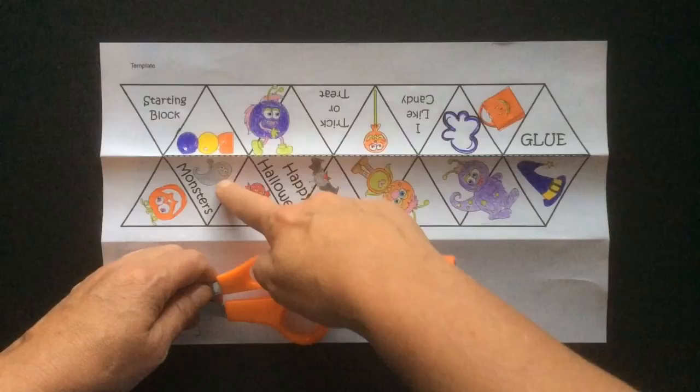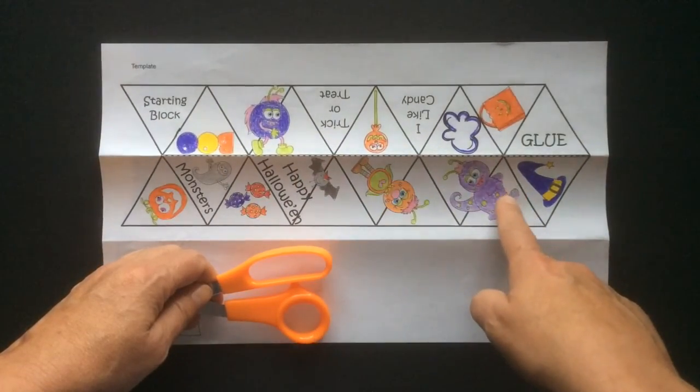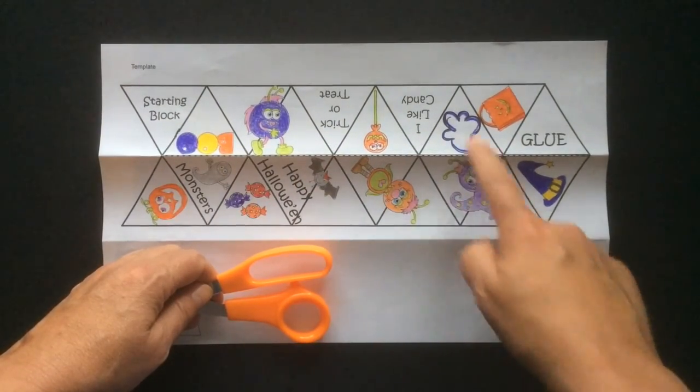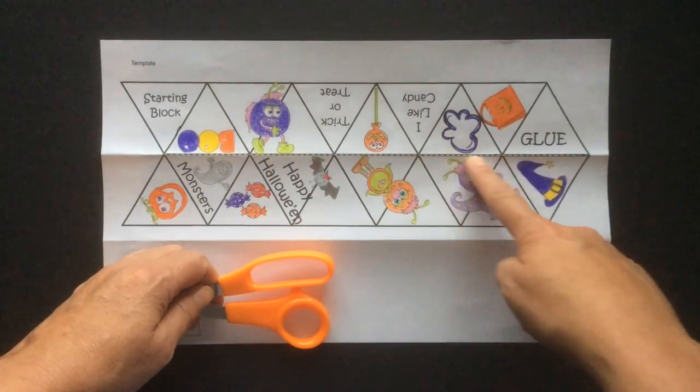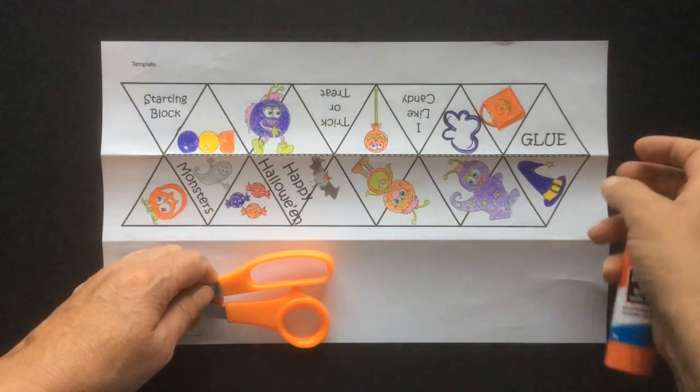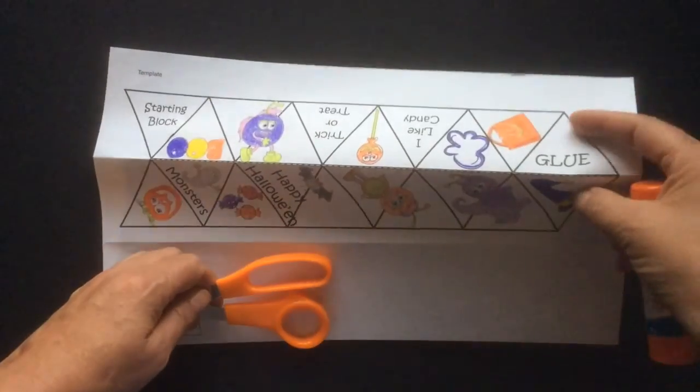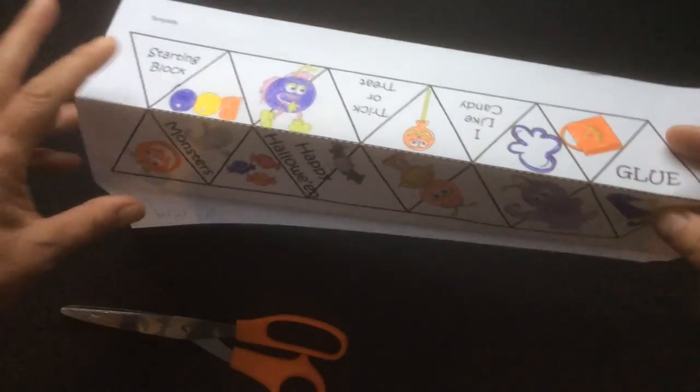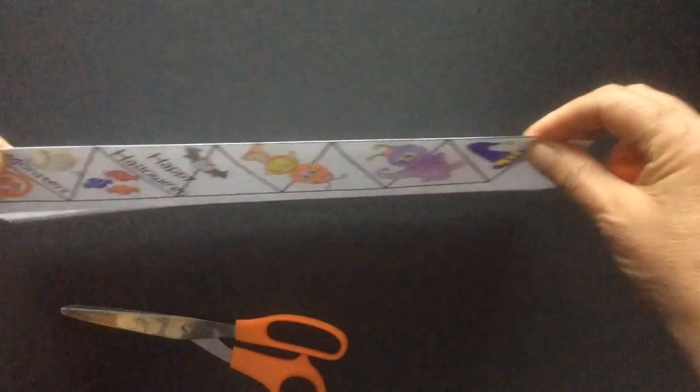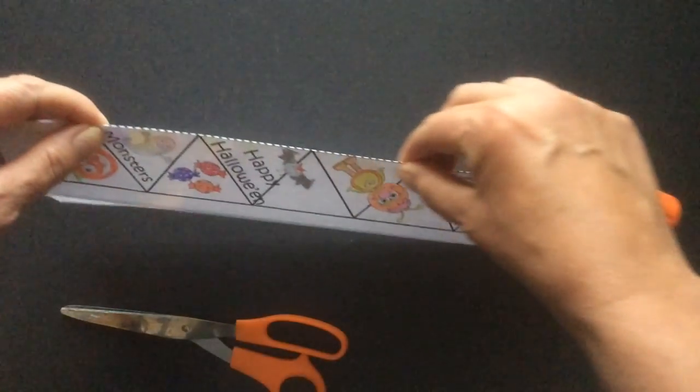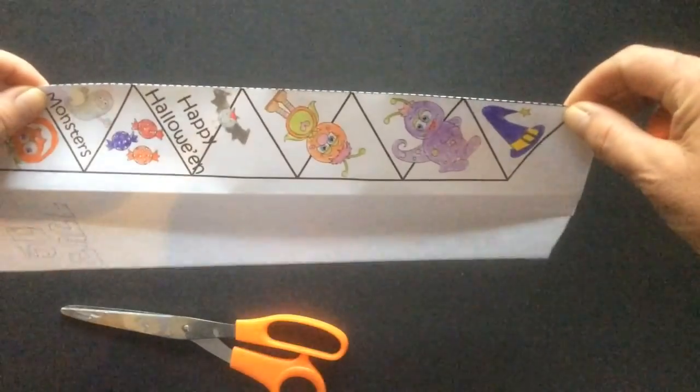Step number one, colour everything that needs colouring. So choose your template, colour it up, and then what I want you to do is fold on this dashed line right in the very middle. So all you have to do is pick up your template. What I do is I pinch on either side and then with my hand just run a nice crease from left to right.